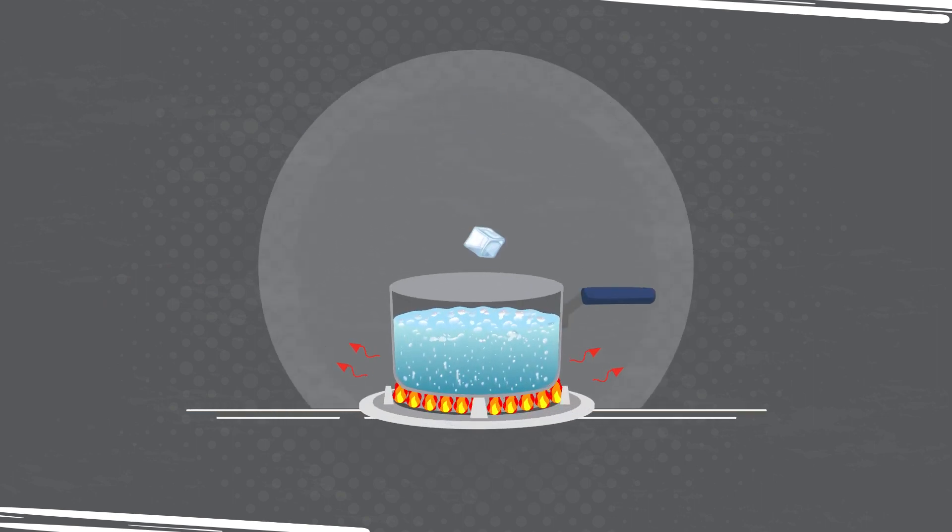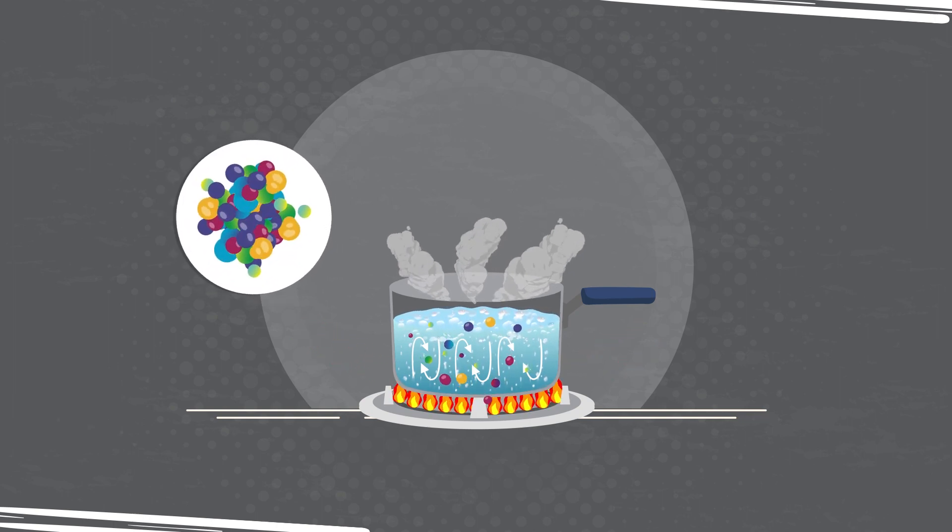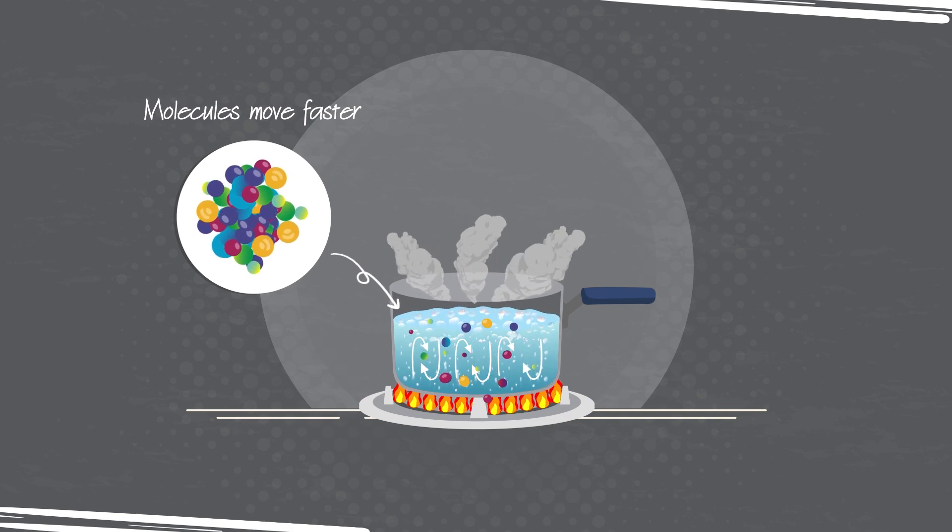Thermal energy can be transferred to other objects causing them to heat up. When you heat up a pan of water, the heat from the stove causes the molecules in the pan to vibrate faster, causing the pan to heat up. The heat from the pan causes water molecules to move faster and heat up. So, when you heat something up, you are just making its molecules move faster.